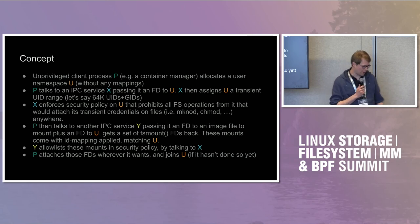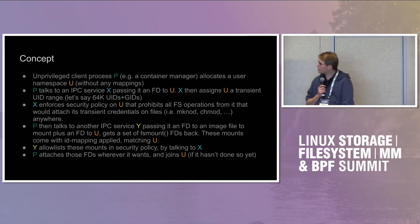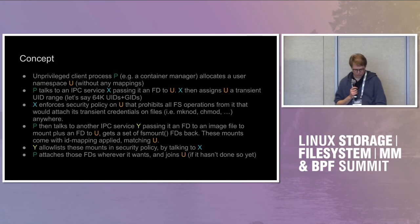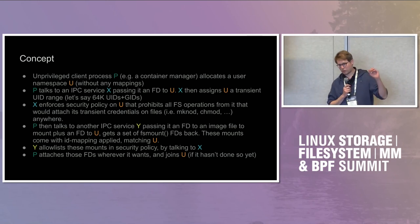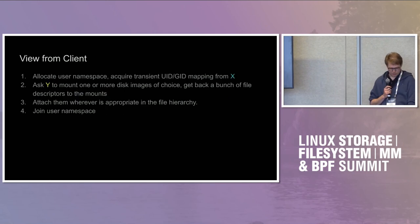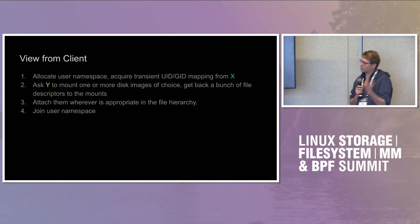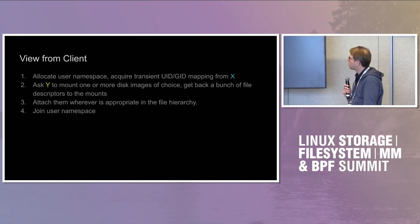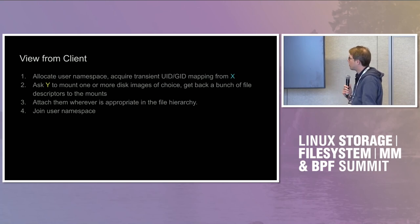That's kind of all there is to the concept. It looks like a lot of steps, but for a client application, it's really easy — you just do one IPC call to get the user namespace set up, and another IPC call to allow certain mounts. From the client view: allocate the user namespace, ask the service for the mapping, ask the other service for the mount, and attach it wherever you want.